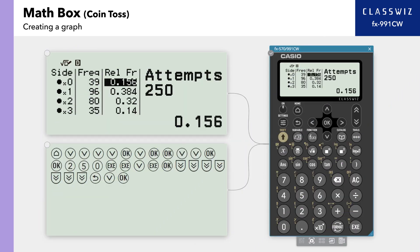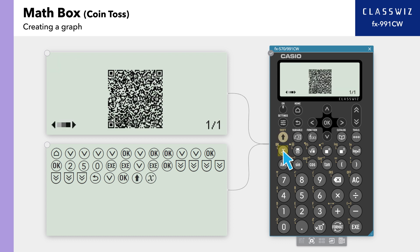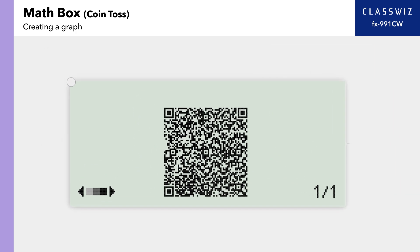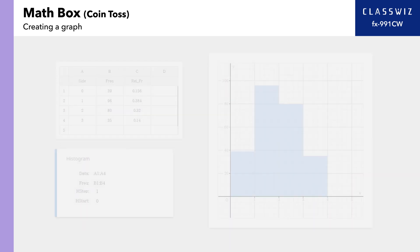You can use your smartphone or other device to see a histogram of the number of heads from these coin flips. From this screen, press Shift, then X to create a QR code. Read the QR code with your smartphone or other device to see the created histogram.